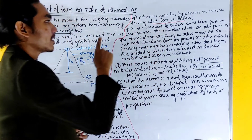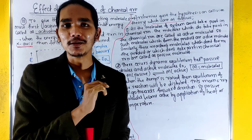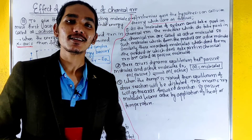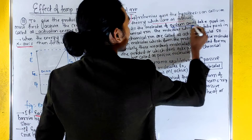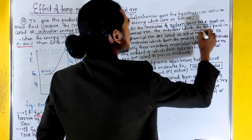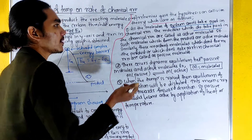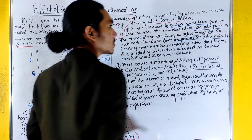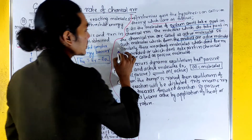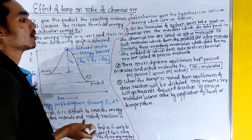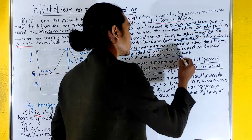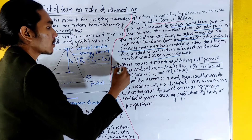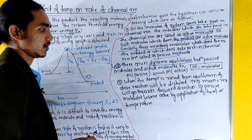All the molecules of the system cannot take part in the chemical reaction. The molecules which do take part in chemical reactions are called active molecules. Those which do not form the product are called passive molecules.